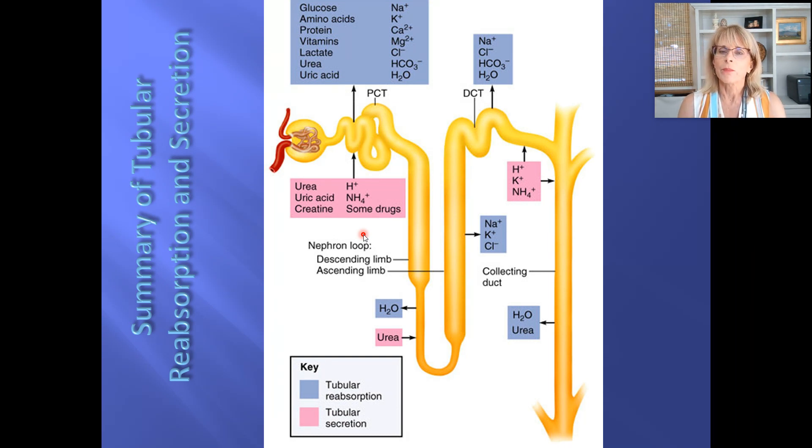Now, I'm going to break things down into the proximal convoluted tubule, the distal convoluted tubule, the nephron loop, and the collecting duct. So we've got four different parts: proximal convoluted tubule, nephron loop, distal convoluted tubule, collecting duct.